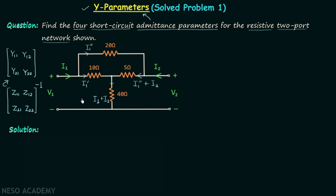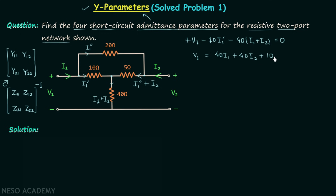In step two we obtain the input and output KVL equations. The input KVL equation gives: V1 = 40·I1 + 40·I2 + 10·I1_prime. When comparing this with the standard z parameter equation, it is not in standard form. Similarly, the output KVL equation is also not in standard form, so our solution is getting complicated.